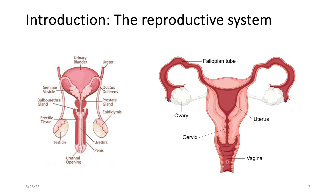The labia majora and minora cover the vestibule into the vagina. Regarding terminology: the singular for testis is T-E-S-T-I-S, and the plural is testes. Alternatively, testicle is singular and testicles is plural. For the female gonad, ovary is singular and ovaries is plural. Those are the gonads.